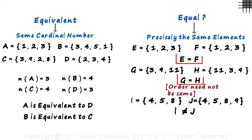Now look at these two pairs of sets which are equal. Cardinal number of E is equal to the cardinal number of F. Cardinal number of G is equal to the cardinal number of H.